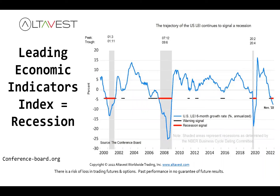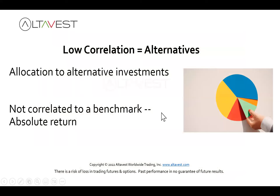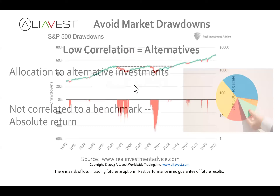Don't expect the Fed to suddenly pivot and go dovish. Powell does not want to be like Burns — the Federal Reserve chairman who made the mistake in the 1970s of lowering rates too quickly, causing inflation to come back even worse by the late '70s and early '80s. They don't want to make that mistake again. Credit card loan debt is at record highs and savings are near historical lows, so you should definitely consider having alternatives in your portfolio.